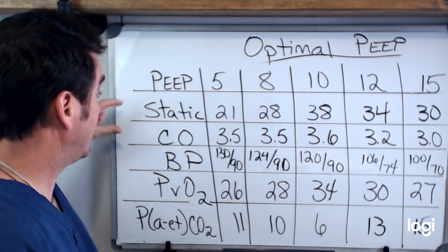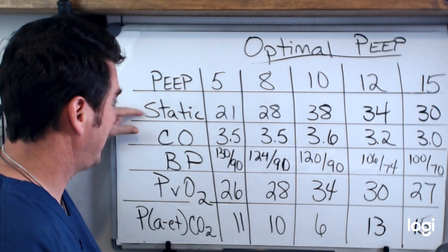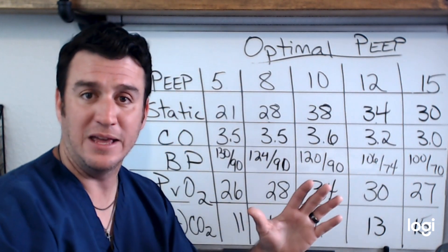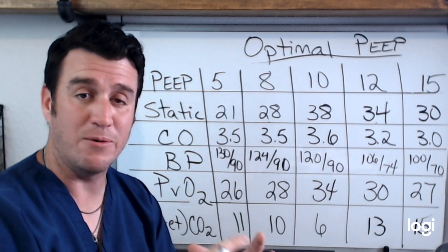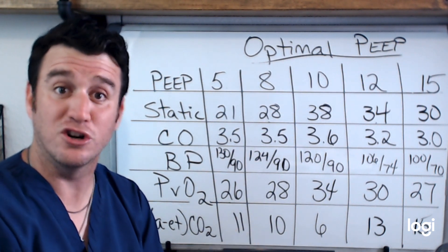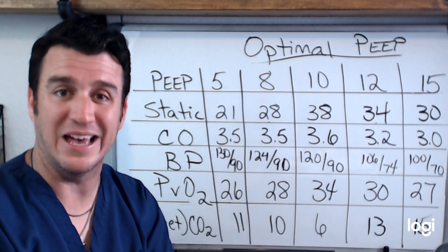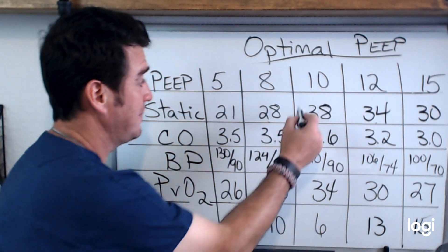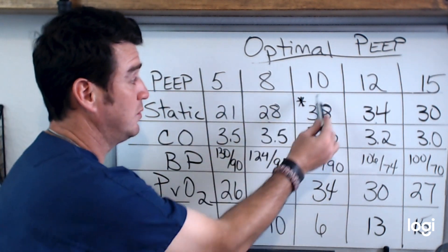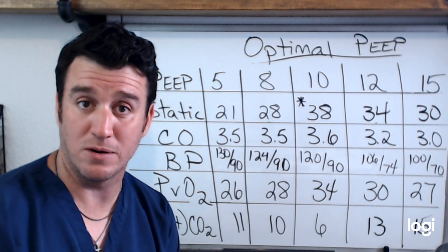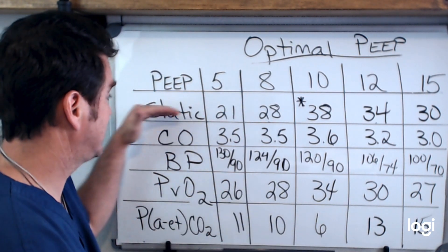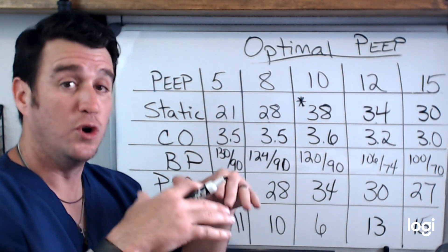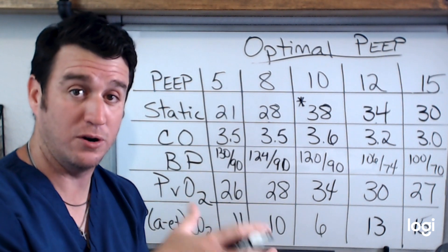Looking at static compliance for this patient, we see values of 21, 28, 38, 34, and 30. If you're on a board exam and asked to choose optimal PEEP based off static compliance alone, you choose the best static compliance. In this case, 38 is the best, pointing to a PEEP of 10 as optimal. As we keep adding PEEP beyond that, the difference between PEEP and plateau starts to get larger.